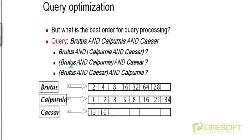Another way to do it would be to take Brutus and Calpurnia first, AND them together, and then AND their result with the postings list for Caesar. A third way would be to take Brutus and Caesar AND them first, and then take the result and intersect it with the postings list for Calpurnia. So there are three ways in which we can answer this query. The question is, which of these three ways is the fastest?